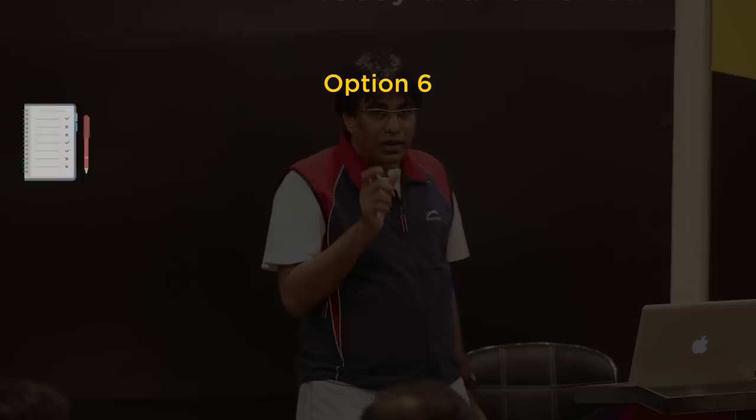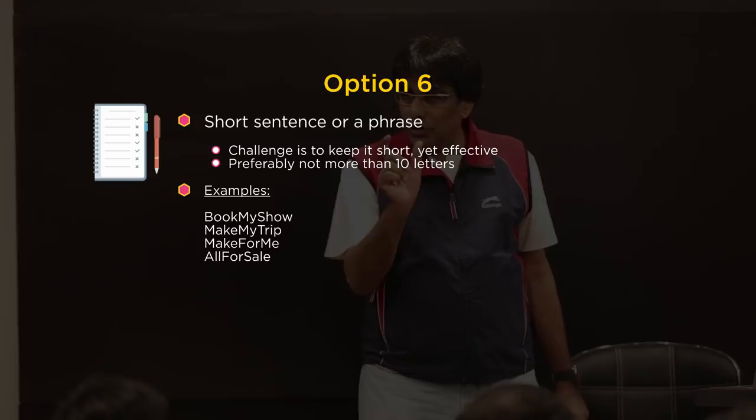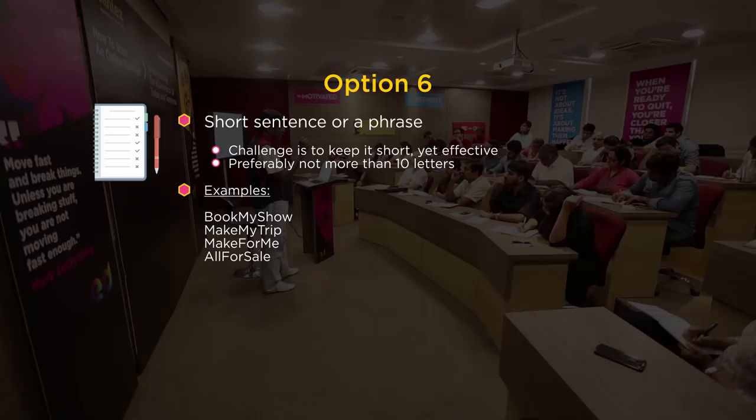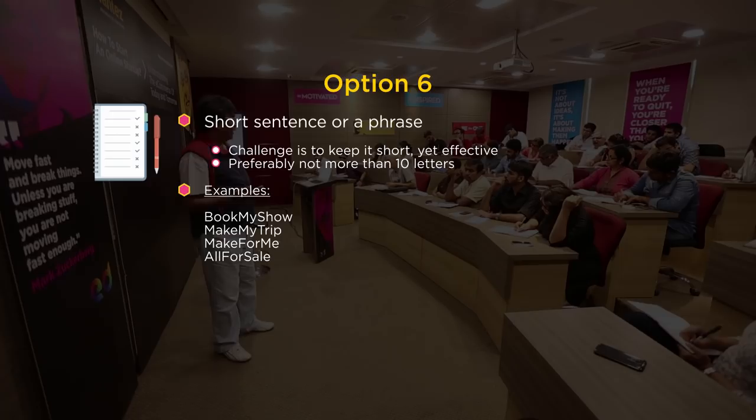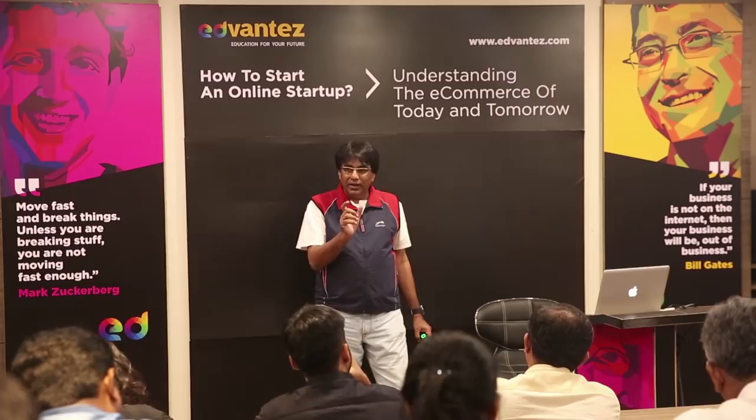Option six: create a short phrase, like Book My Show, All For Sale, Make My Trip. These are short phrases. The challenge is to keep your domain name within 10 alphabets. Technically a domain can be up to 256 characters, but personally I believe your domain name should not be longer than 10 alphabets, otherwise it becomes difficult for people to remember.